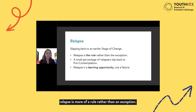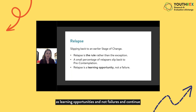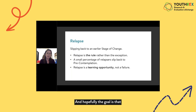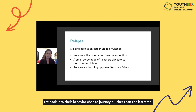Relapse is more of a rule rather than an exception. A small percentage of youth will relapse completely back to pre-contemplation, but generally they will relapse to an earlier stage at some point. It's really important to take these relapses as learning opportunities and not failures, and to continue getting them back onto their action plan. The goal is that with every relapse, it becomes less traumatic or impactful, and they're able to get back into their behaviour change journey quicker than the last time.